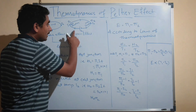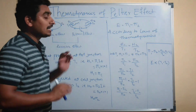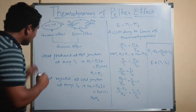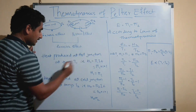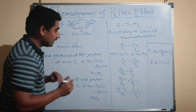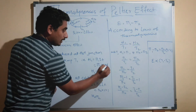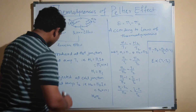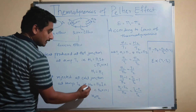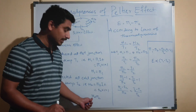When one ampere of current passes through the thermocouple for one second, the Peltier coefficient at the hot junction is Pi1 and the Peltier coefficient at the cold junction is Pi2. The heat produced at the hot junction at temperature T1 is H1 = Pi1 × I × t. Since I = 1 ampere and t = 1 second, H1 = Pi1. The heat rejected at the cold junction at temperature T2 is H2 = Pi2 × I × t, and since I = 1 and t = 1, H2 = Pi2.